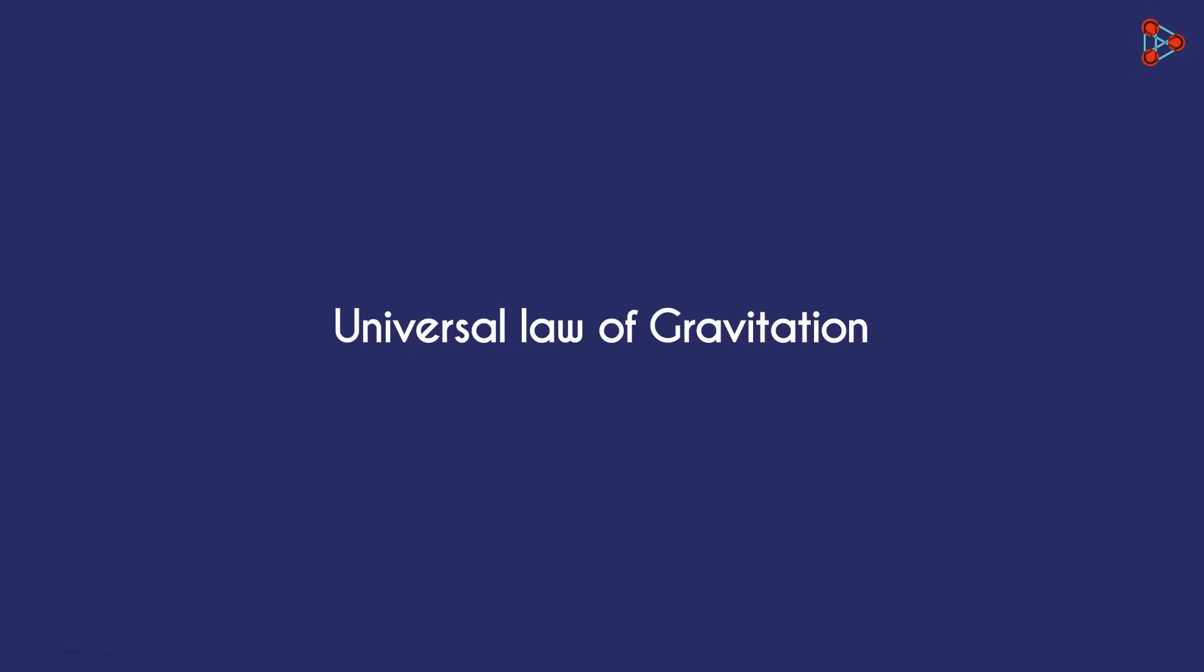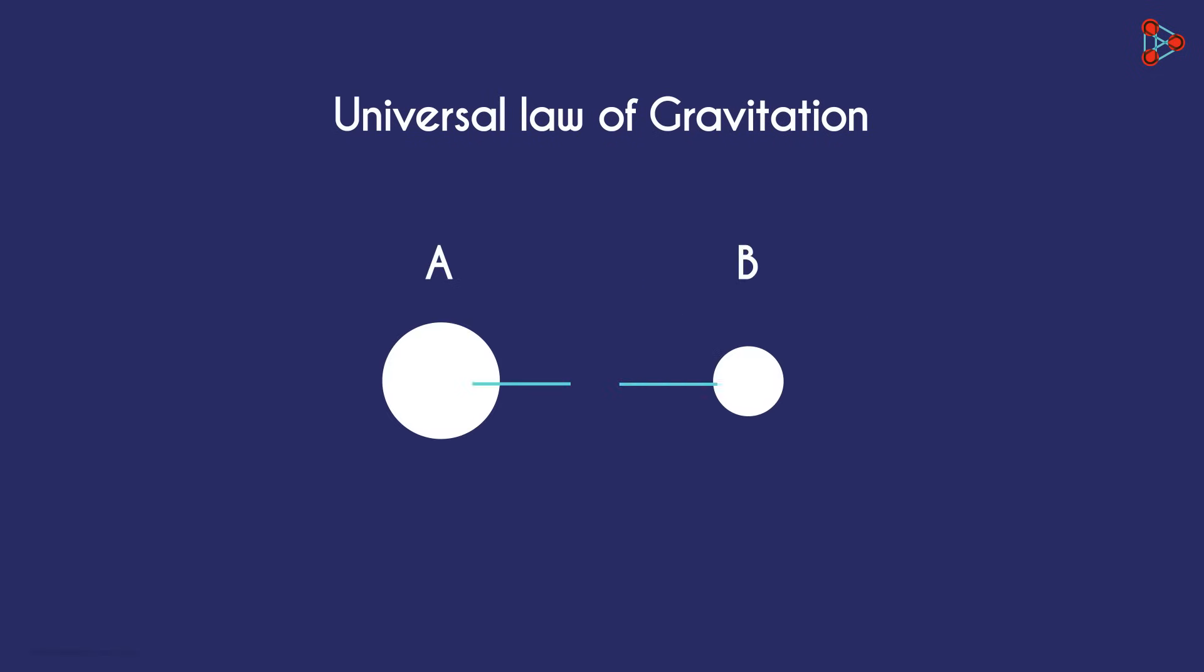Say there are two objects A and B separated by a distance d. The distance between the centers is considered the distance between the two objects. Assume that the mass of object A is m1 and that of object B is m2. As object A is bigger, let's assume m1 to be bigger than m2.